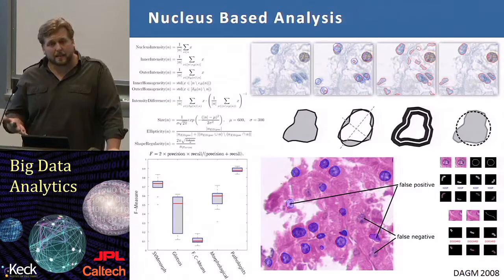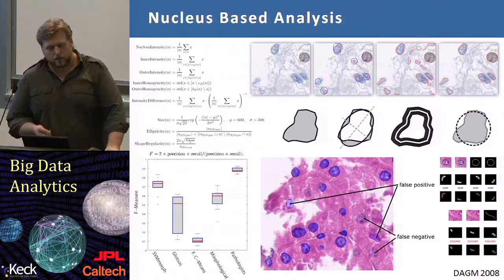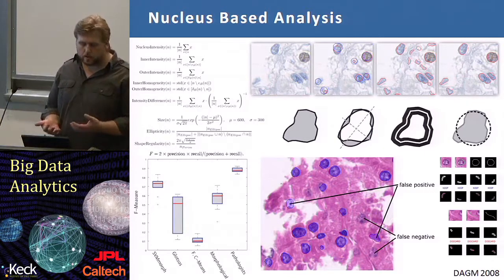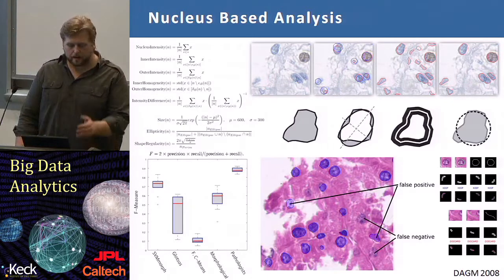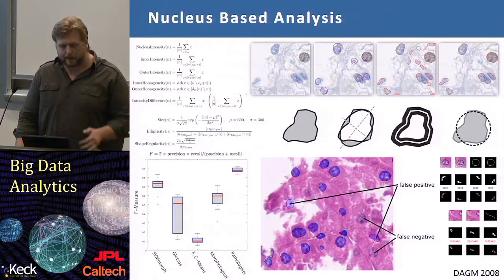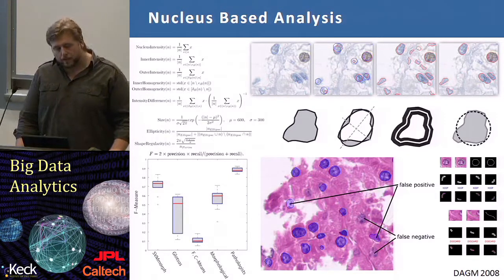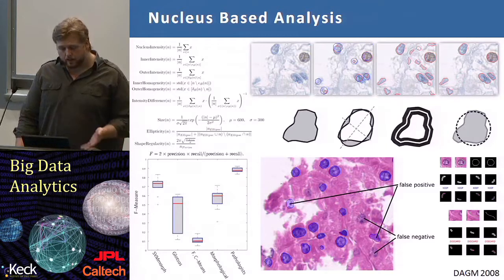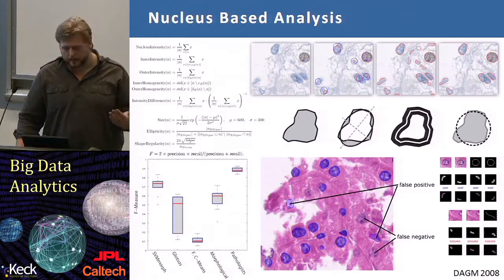The next level is to characterize the nuclei we actually found. We now use mathematics to describe different kinds of cell nuclei. There are characteristics such as the difference between inner and outer intensity, the weakliness of the boundary, and so on. Based on that, we again get a feature vector of several dozen descriptors and can use the random forest again to differentiate between cancerous and non-cancerous cell nuclei.